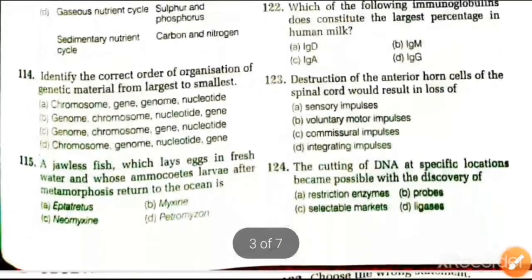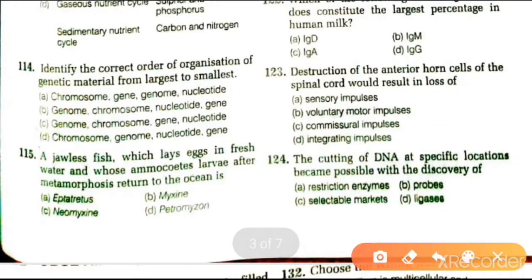Next question: identify the correct order of orientation of genetic material from largest to smallest. Options are chromosome-gene-genome-nucleotide; genome-chromosome-nucleotide-gene; genome-chromosome-gene-nucleotide; or gene. The answer is C: genome to chromosome, chromosome to gene, and gene to nucleotide.